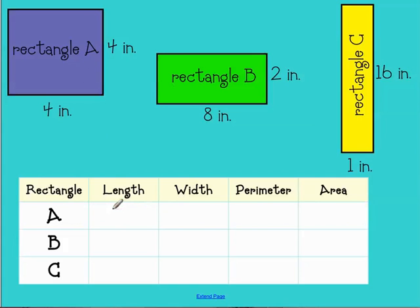So rectangle A has a length of four inches and a width of four inches. And I need to solve the perimeter. So think in your head, what is the formula that helps me solve the perimeter of a rectangle? I like to use the shortcut, which is perimeter equals two times length plus width, and I'm going to plug in my information in place of the variables. So perimeter equals two times length plus width. Length plus width in this case is four plus four, which is eight. Two times eight equals 16. So rectangle A has a perimeter of 16 inches.